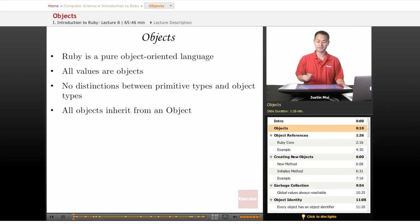So objects are a pure object-oriented language. What happens is everything in Ruby is an object, as we've gone through in other lessons. All values are objects, and there's no distinction between primitive types and object types.